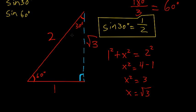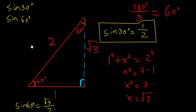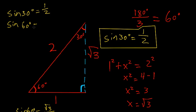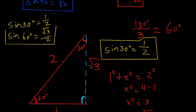So now we've solved this 30-60-90 degree triangle. Sine of 60 degrees is opposite over hypotenuse: the opposite side of the 60-degree angle is square root of 3, and the hypotenuse is 2. Let's write both of these up as a summary: sine of 30 degrees is one half, and sine of 60 degrees is square root of 3 over 2. So we've found sine of 60 degrees, sine of 30 degrees, and sine of 45 degrees.